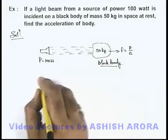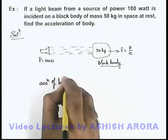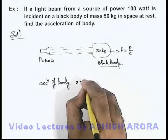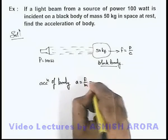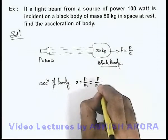So the acceleration of the body in this situation we can simply calculate as F upon m, and the value of F is P by c, so this can be written as P by mc.